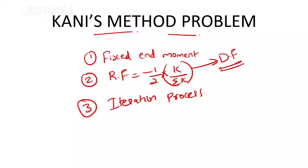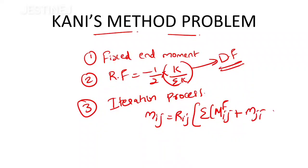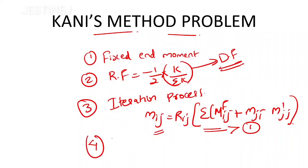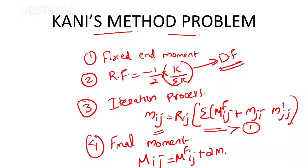We already derived an equation related with this iteration: m_ij equals r_ij multiplied by sigma m of ij plus mji minus m-dash-j. To find the rotation of the near end, we follow certain steps using this equation for the iteration process. The last step is the final moment, calculated as m_ij equals m of ij plus 2m_ij plus mji minus m-dash-ij, where i represents the near end and j represents the far end.